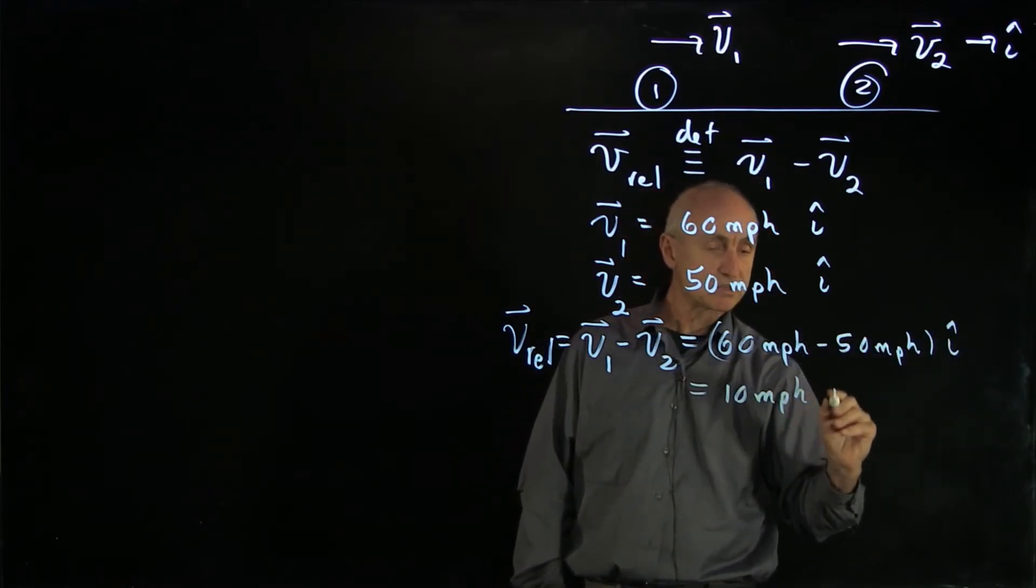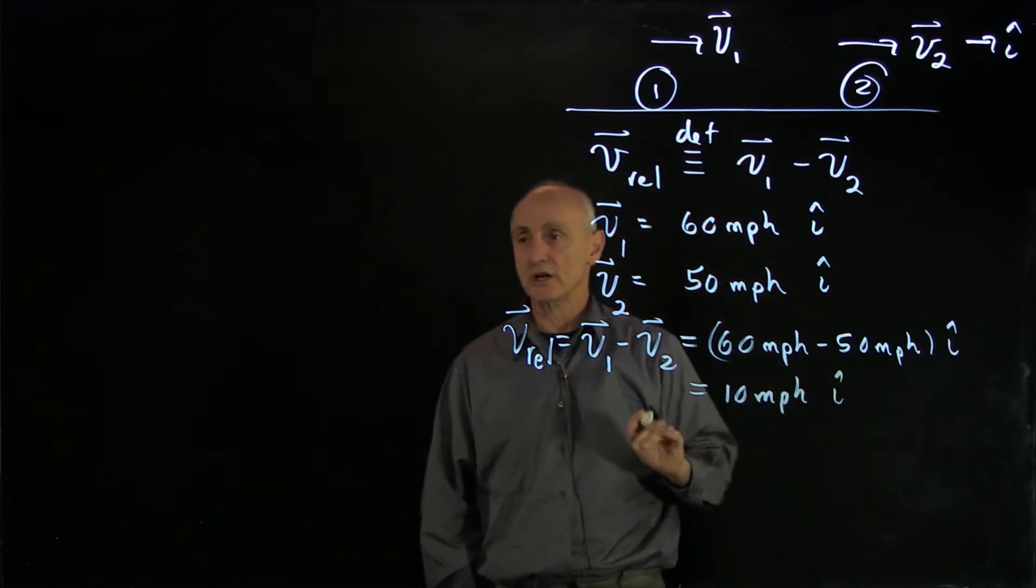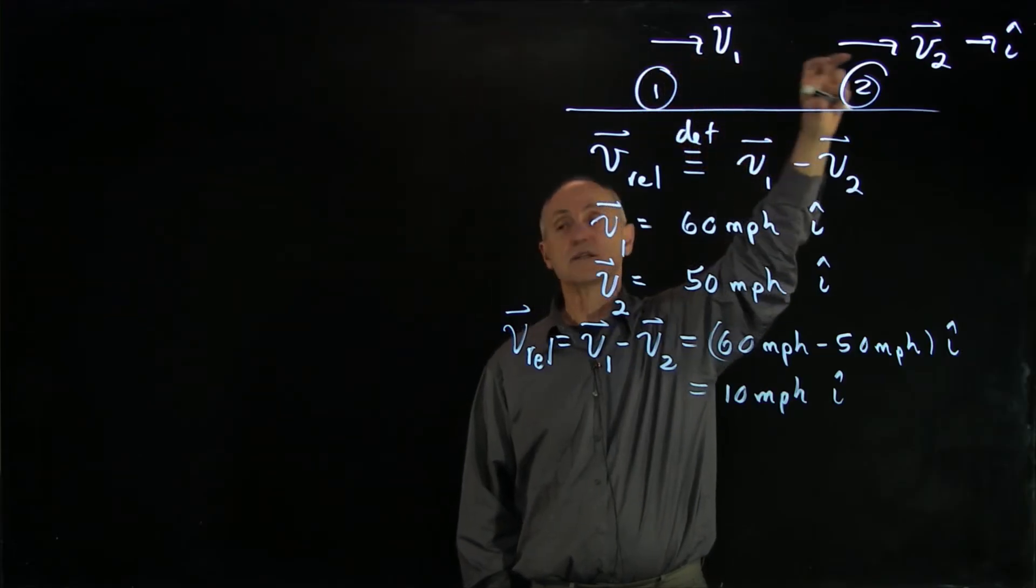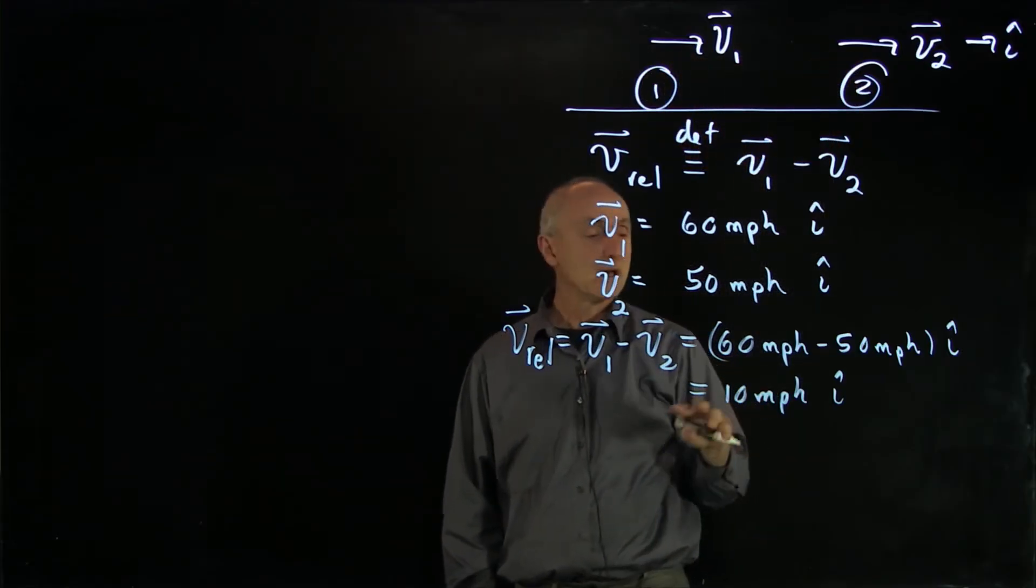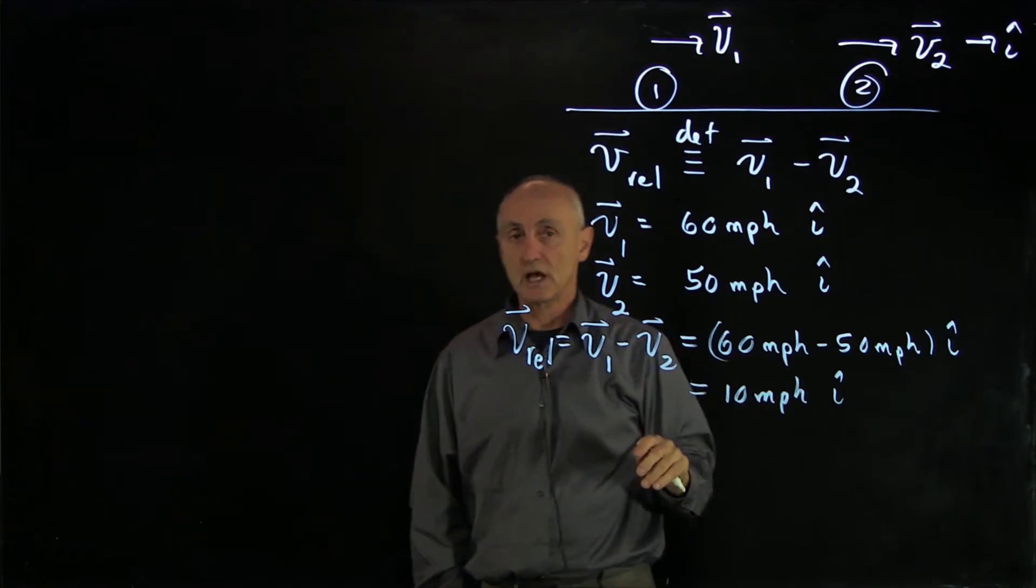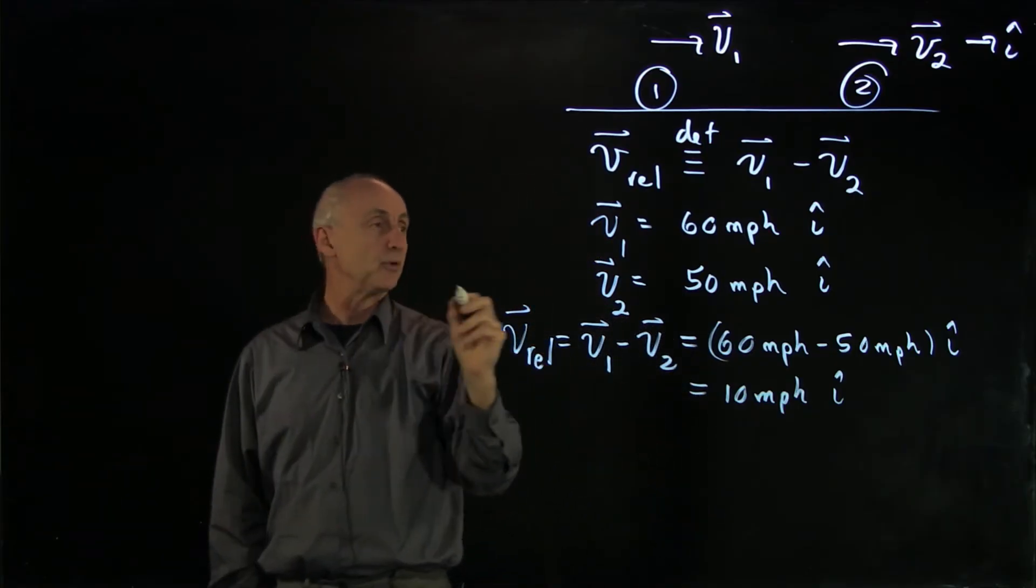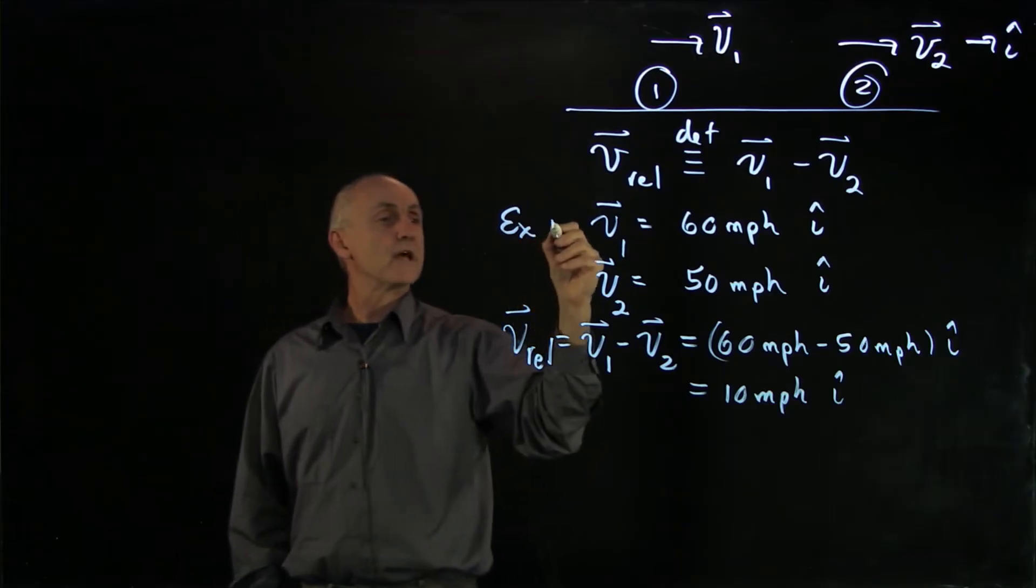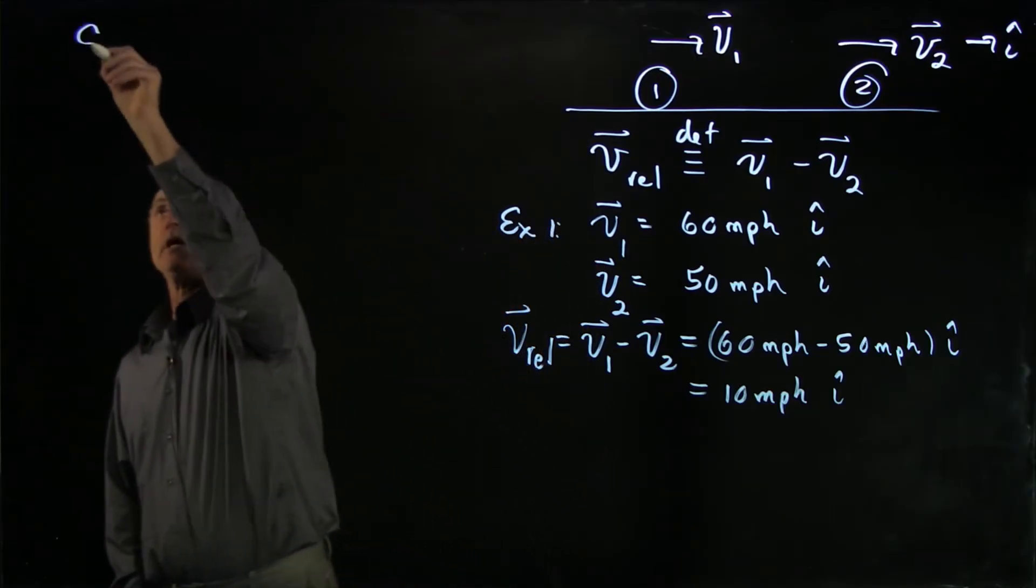And that's what people experience when one car is approaching another car. If you're in car 2, car 1 seems like it's coming at you at 10 miles per hour. This is what we mean by relative velocity. There's another important example. So that's example 1. The other important example to look at, example 2.